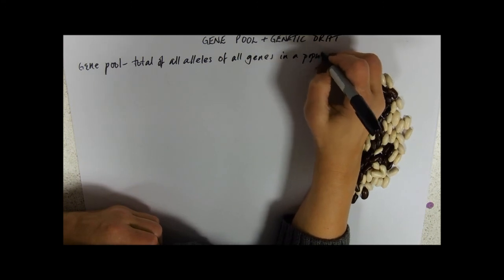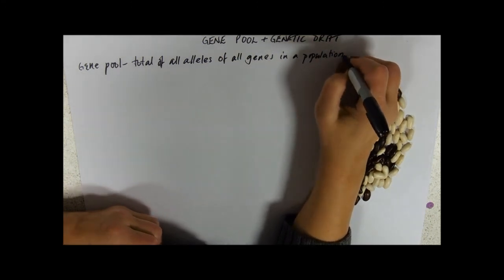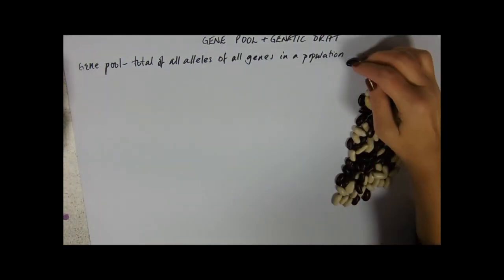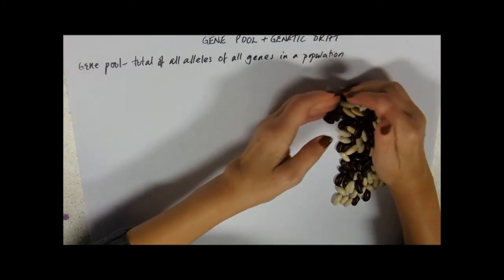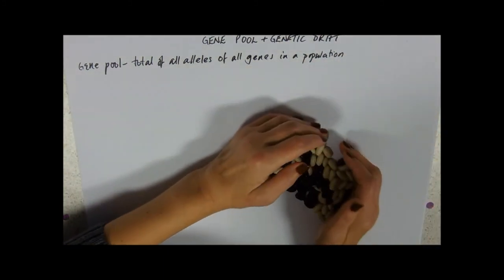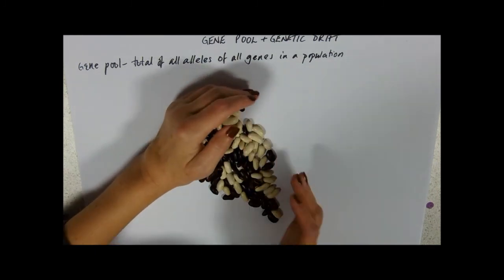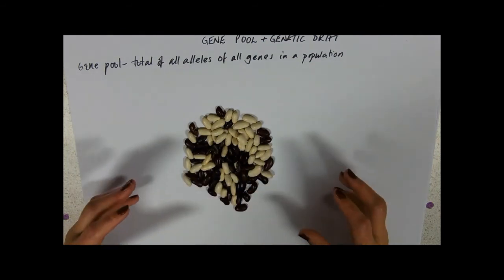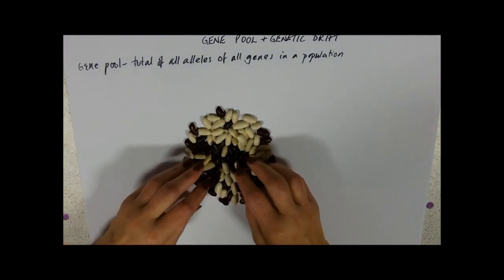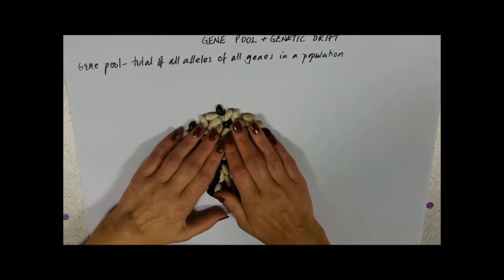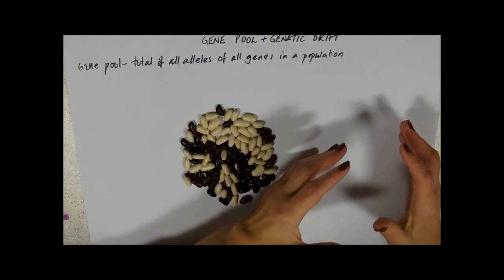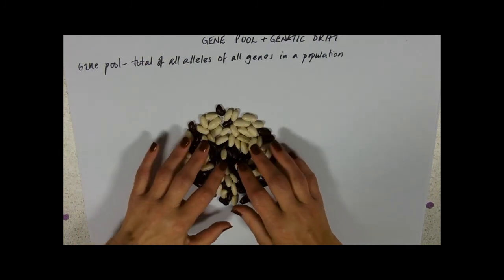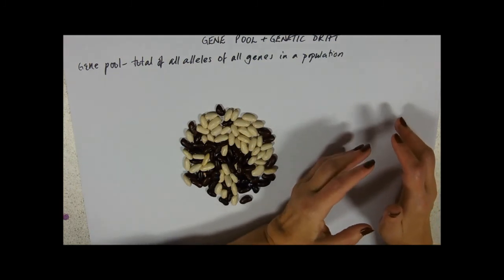So why do we even bother having a term for that? Well the whole point is that you're dealing with variation and evolution, and your gene pool is what you can draw on to pass your alleles on to the next generation. And whatever alleles get passed on from this gene pool is going to make the gene pool of the next generation. And if we alter what's in that gene pool in any way, that could be in the gene pool of the next generation.